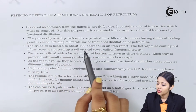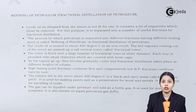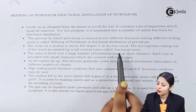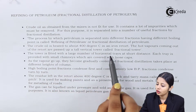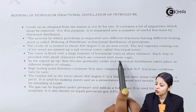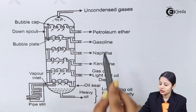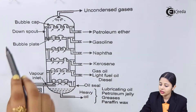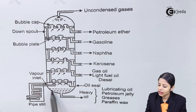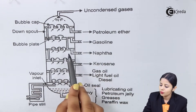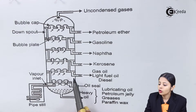The crude oil is heated to about 400 degrees Celsius in an iron retort. The hot vapors coming out of the retort are passed up a tall vertical tower called the fractional tower. The tower is fitted with a large number of horizontal trays at short distances, each tray provided with small chimneys covered with loose caps. This vertical cylinder is divided into different parts with the help of trays — called bubble plates. The vapors go up through the chimneys, which help the condensed oil exit through the outlets.